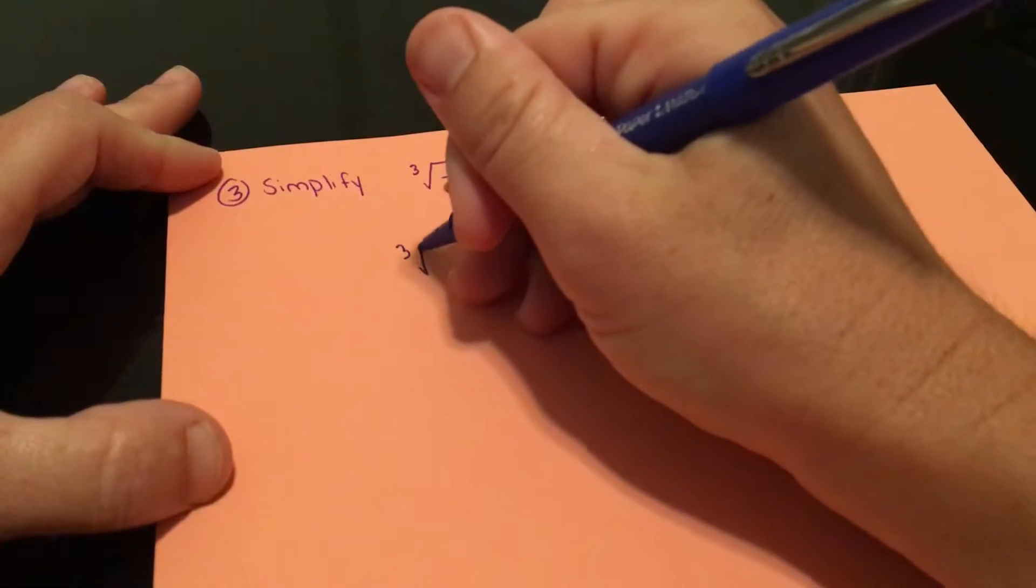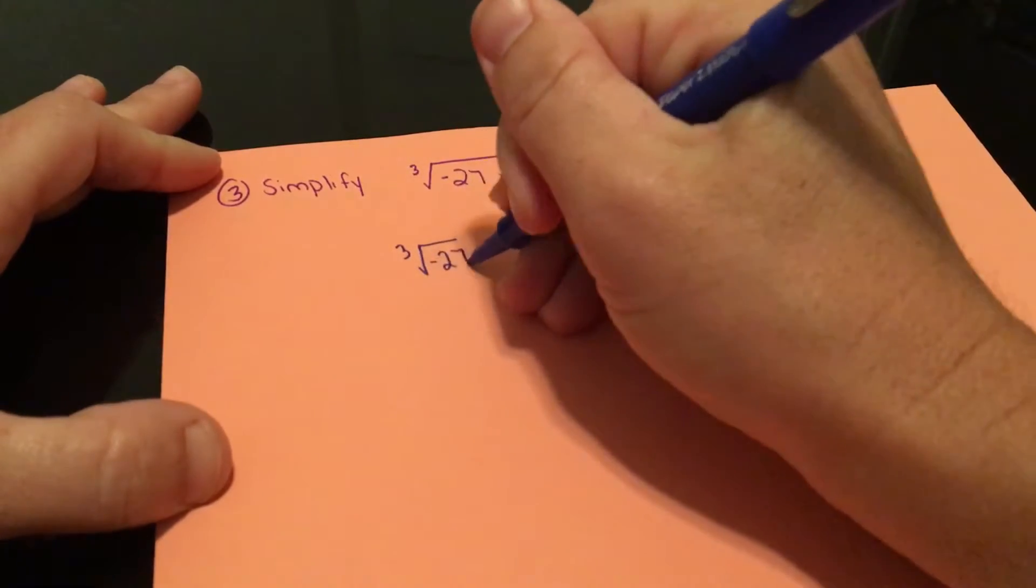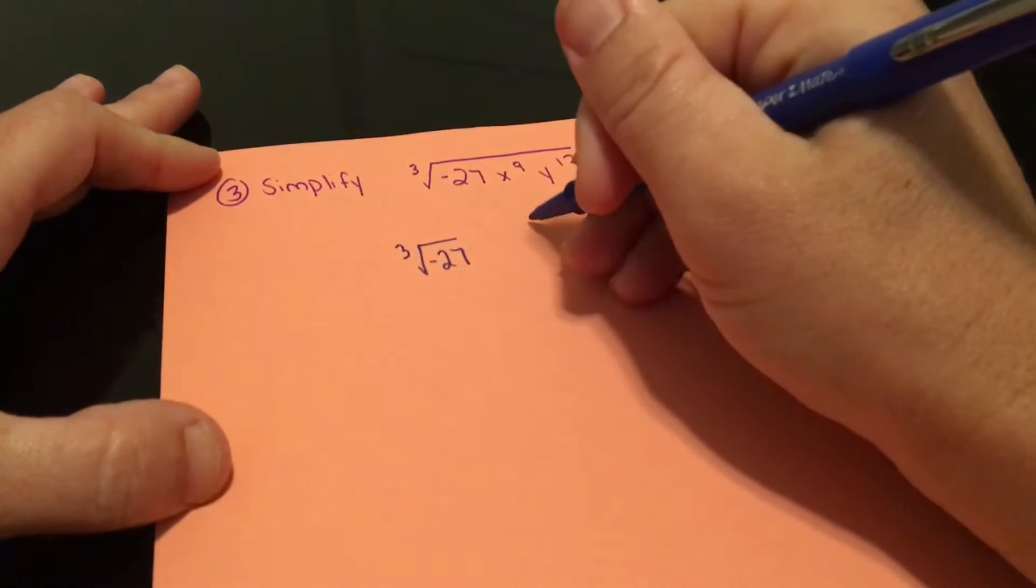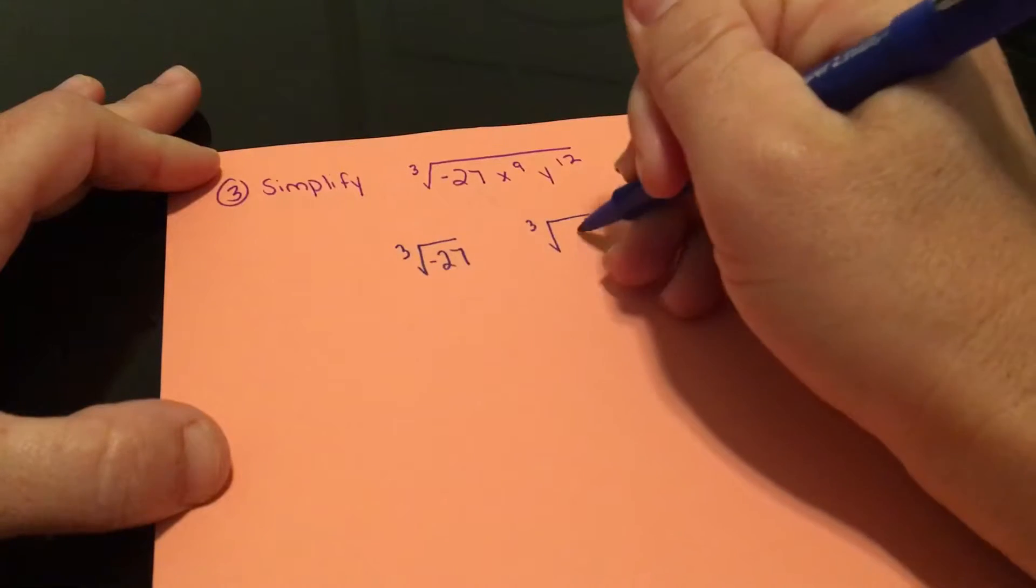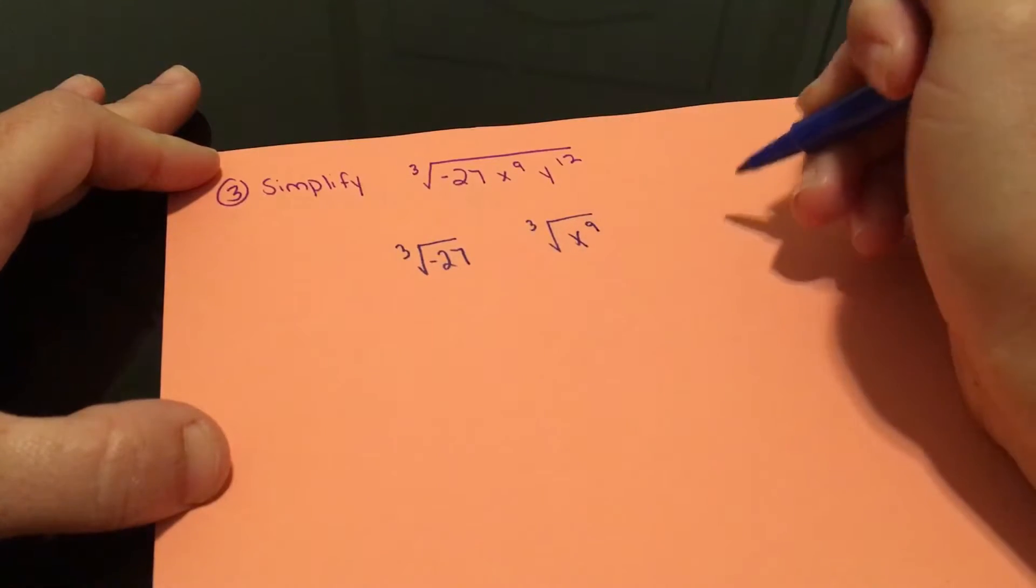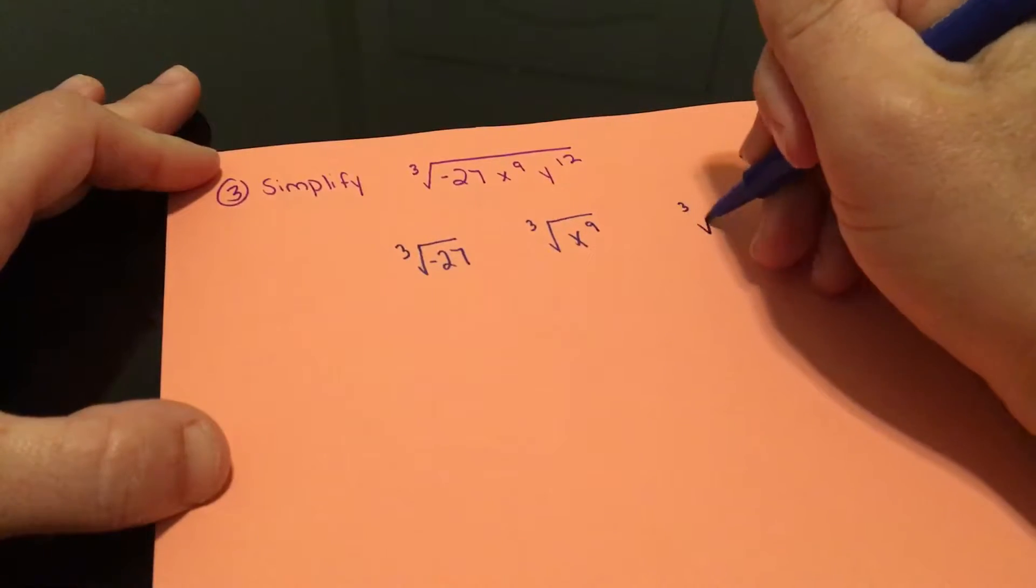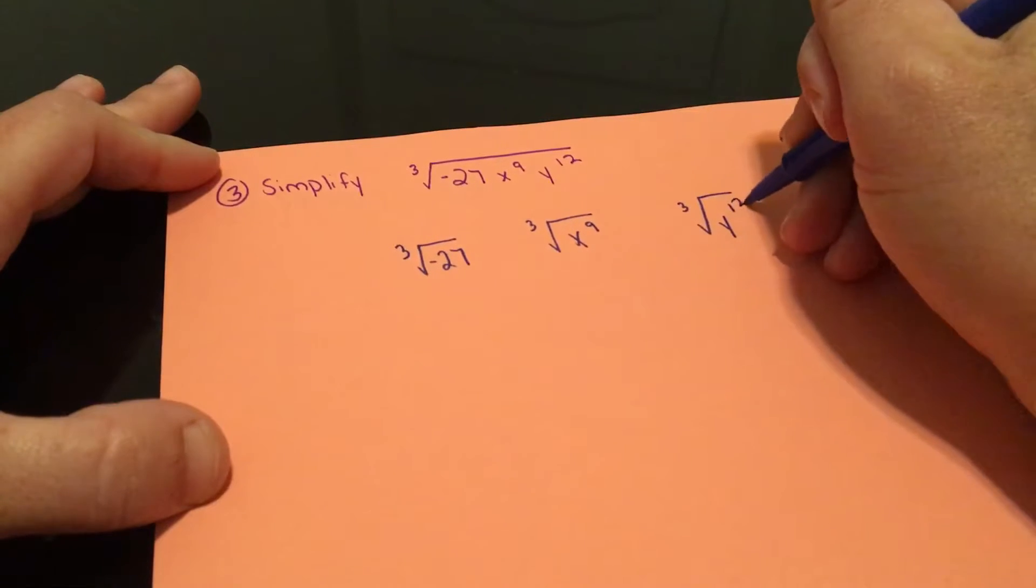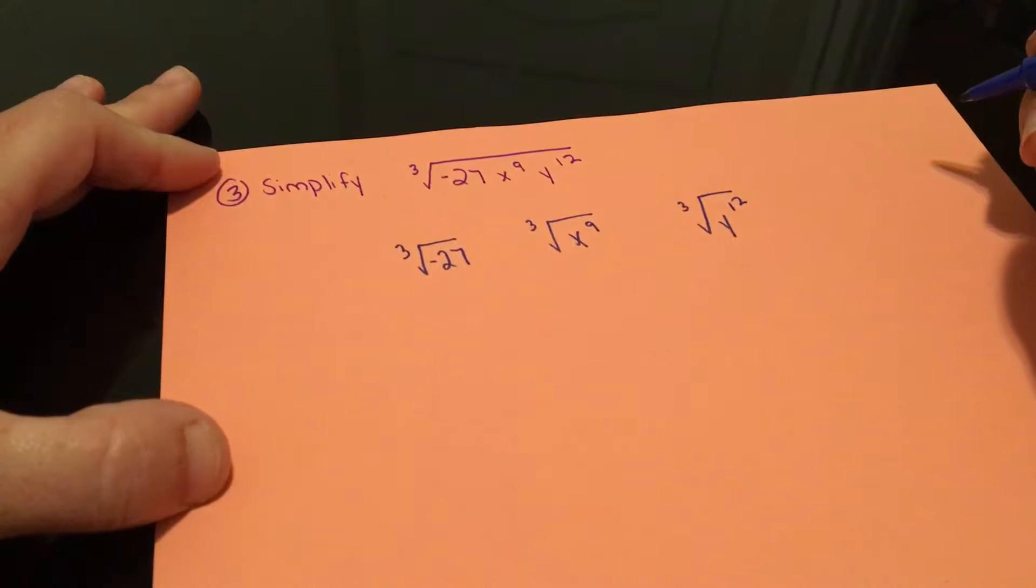This is going to become cube root of negative 27. Then we're going to have the cube root of x to the 9th, and then we're going to have the cube root of y to the 12th. Now we're going to simplify each of these.